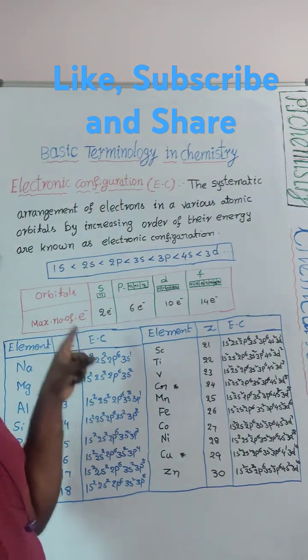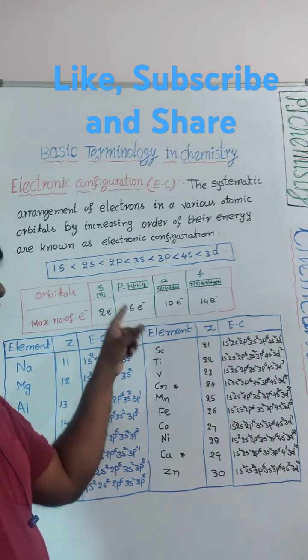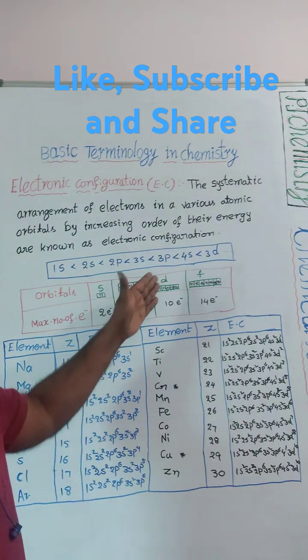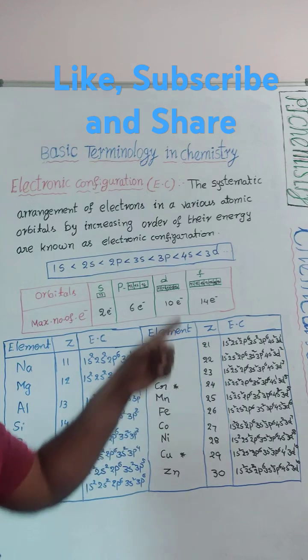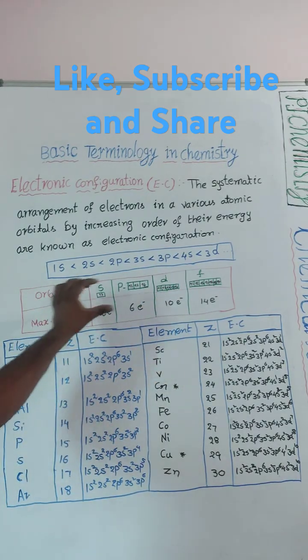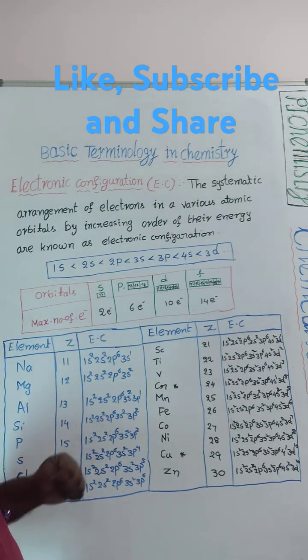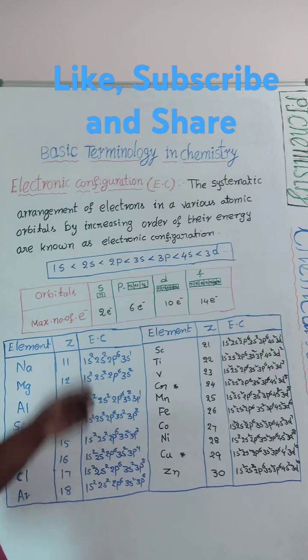S orbital means maximum 2 electrons, P orbital means maximum 6 electrons, D orbital means maximum 10 electrons, F orbital means maximum 14 electrons. As per that we need to fill the electrons in increasing order.